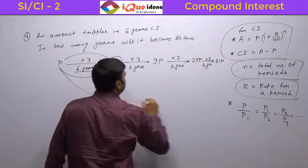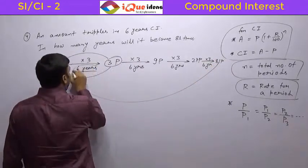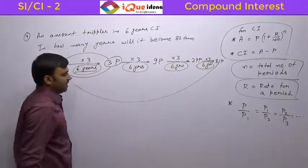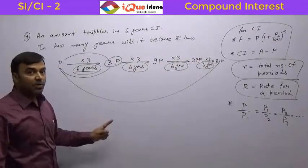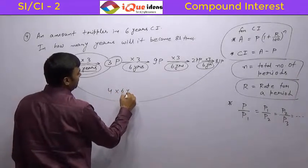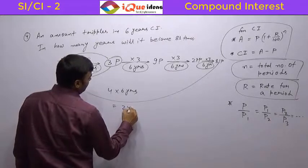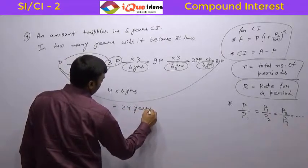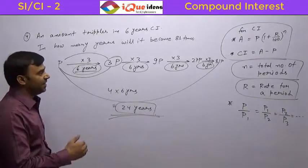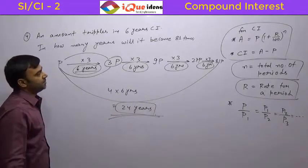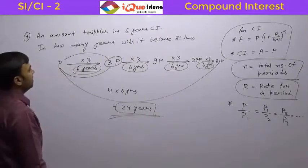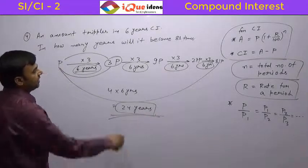So from P to 81P it is 4 times 6 years. Please understand it is a different thing. It is compounded situation that we are doing now. So it becomes 4 times 6 years that is 24 years. So this will happen in 24 years. So this is an easier situation. Compounded case is an easier situation. So this is one beautiful case that we have done. Let us take couple of more questions on the fundamental properties first.